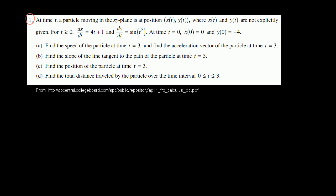Problem number one. At time t, a particle moving in the xy-plane is at position x of t, y of t, where x of t and y of t are not explicitly given. For t greater than or equal to 0, the derivative of x with respect to t is 4t plus 1. The derivative of y with respect to t is sine of t squared. And at time t equals 0, x of 0 is 0 and y of 0 is negative 4.